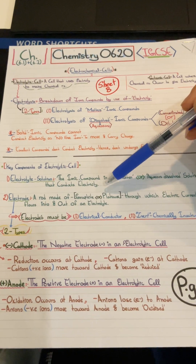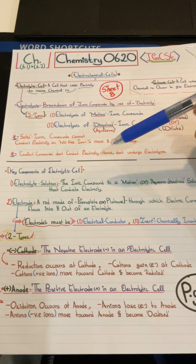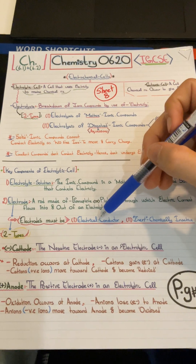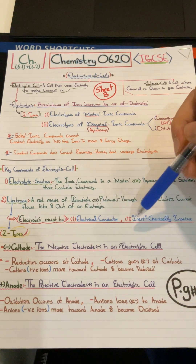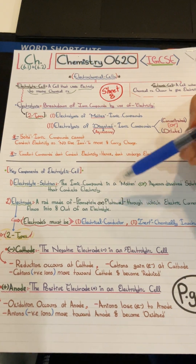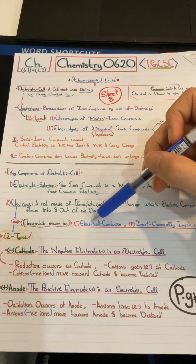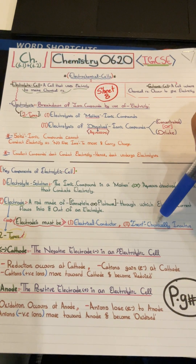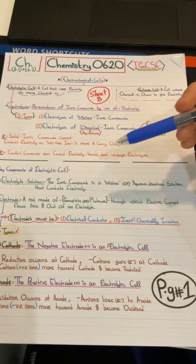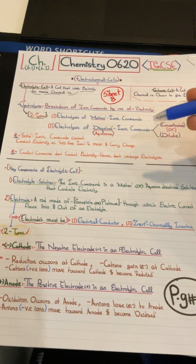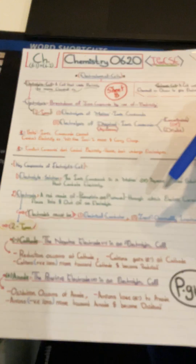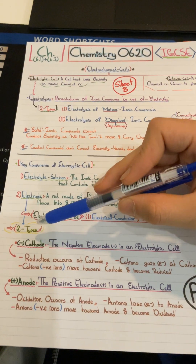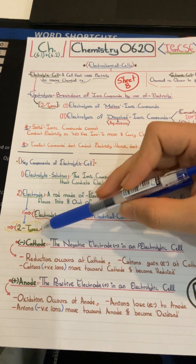Graphite and platinum are used because electrodes must have two properties: they must be electrical conductors and chemically inert. They must be inert so they do not form any other chemical reaction with any of the substances within the electrolytic cell. There are two types of electrodes in an electrolytic cell: the cathode and the anode.